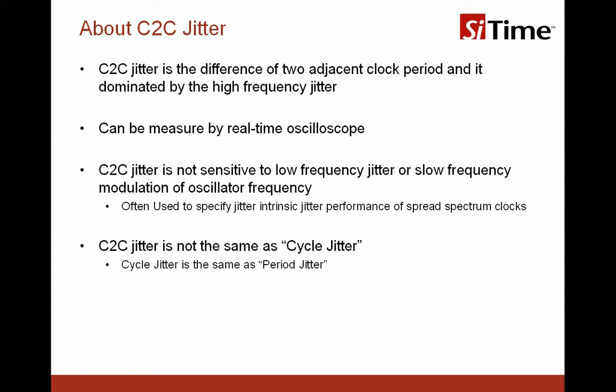Cycle-to-cycle jitter is often used to specify the intrinsic jitter performance of spread spectrum clocks. In terminology, cycle-to-cycle jitter is not the same as the so-called cycle jitter — the cycle jitter is actually the same as the period jitter.